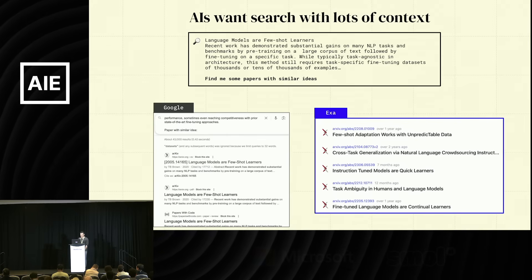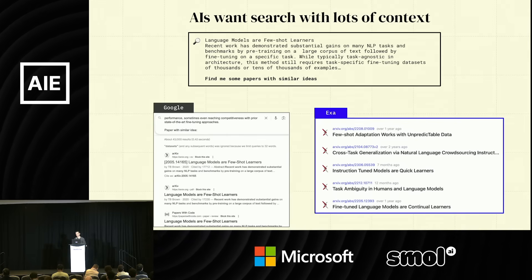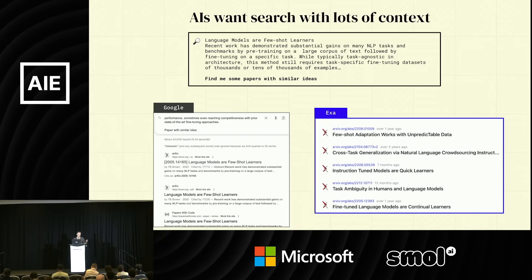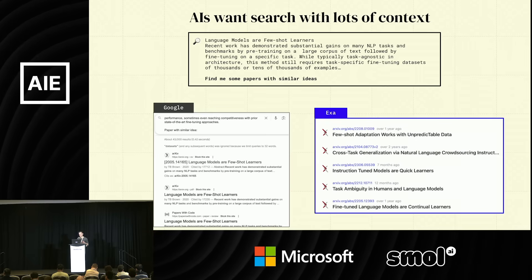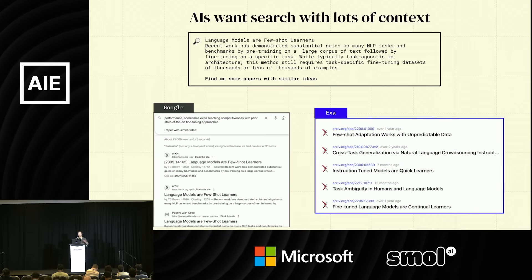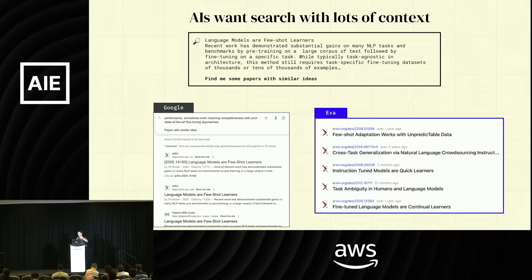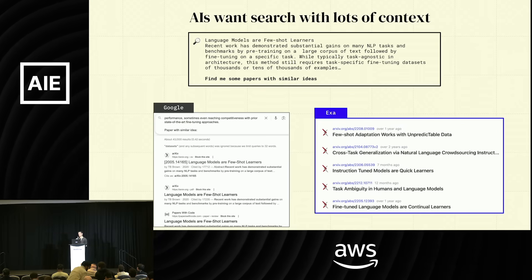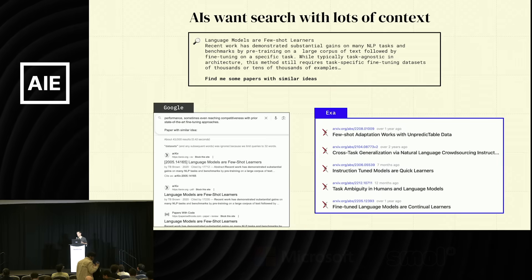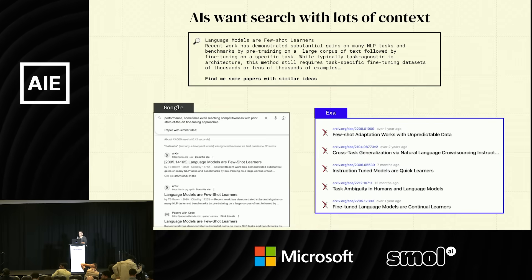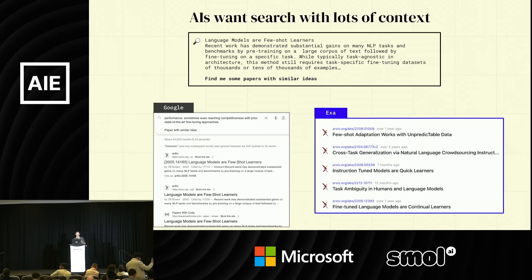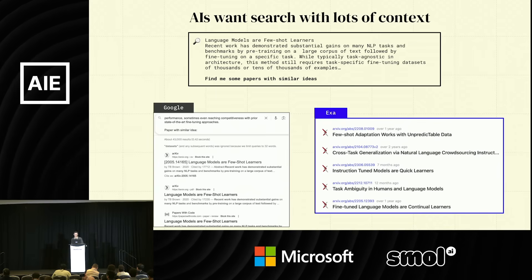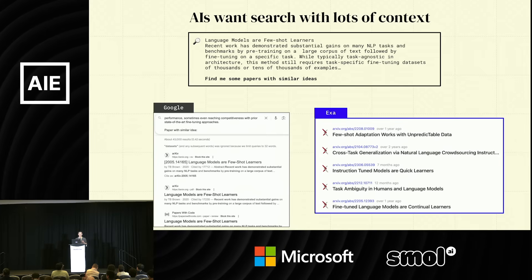Another difference is AIs want to search with lots of context. If you have an AI assistant that you talk to all day and then ask for restaurants or apartments, the AI has lots of context on you. So it should be able to search with a large multi-paragraph description saying 'my human is a software engineer who likes these types of things — give me restaurants that match those preferences.' You need a search engine that can handle multiple paragraphs of text. Traditional search engines like Google weren't meant for that because humans would never type multiple paragraphs.